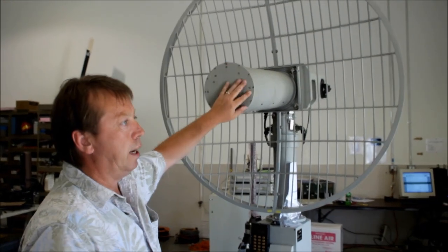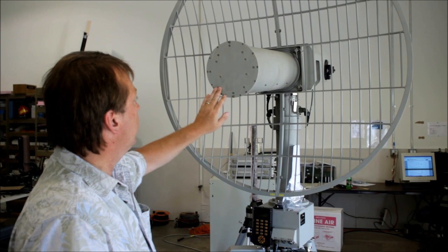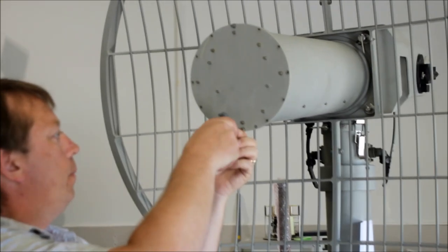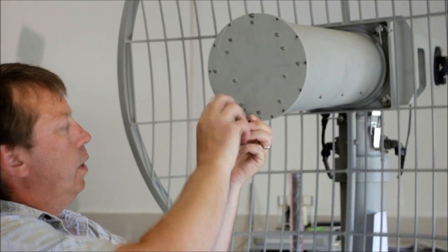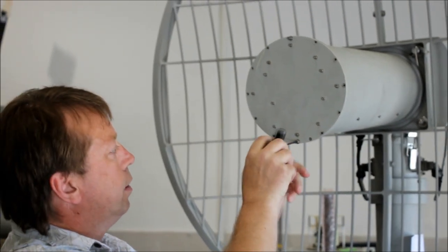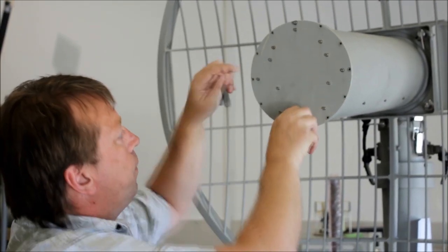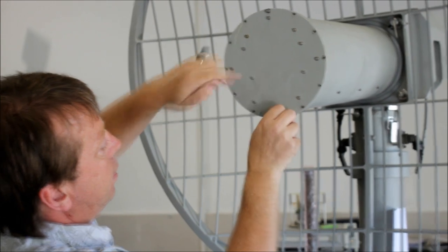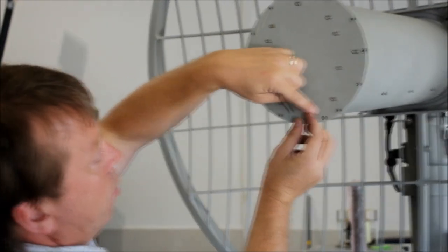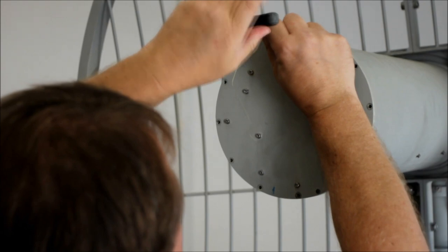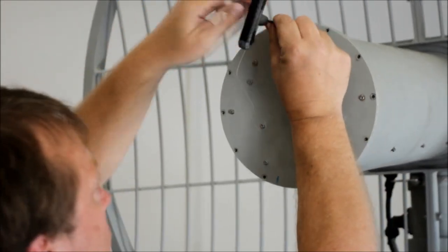Now for this demonstration I already removed ten of the bolts across the scanner. It's not really necessary to mark the scanner as there's an alignment Allen screw at the bottom. We'll use that when we realign it.